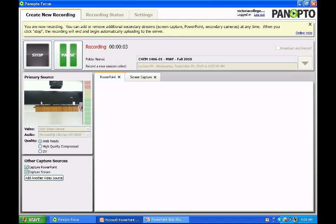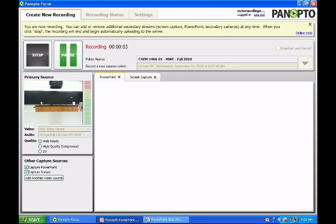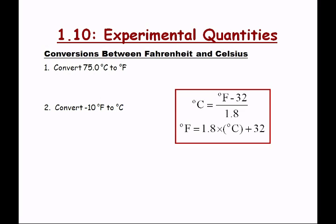There are two equations here that will help you convert from Celsius to Fahrenheit. These are probably the first two equations that you're going to need to memorize for the test. You're not going to have any sort of note sheet for the first test, so I want you to commit these things to memory because you're going to have to convert from Celsius to Fahrenheit on the first test. Let's go ahead and convert 75 degrees Celsius to Fahrenheit. Which one of these two equations do you think we'll use — the top or the bottom one?